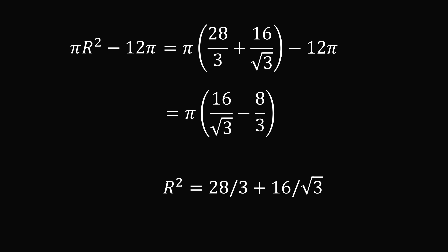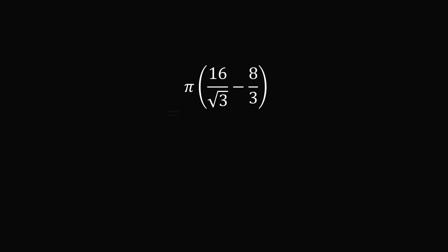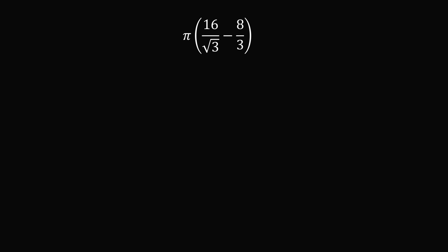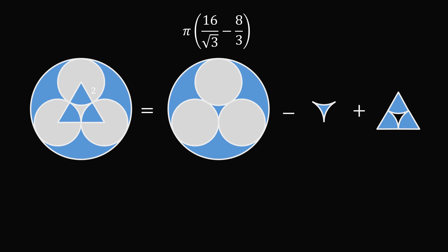It results in the following expression. So we can substitute this back in, and we know that the area will be equal to pi multiplied by the quantity 16 divided by the square root of 3 minus 8 over 3. So we've solved for one part of the problem and we know this area.